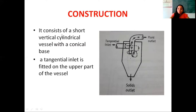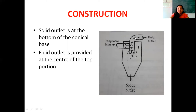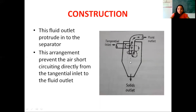The cyclone separator consists of a short vertical cylindrical vessel with a conical base. The tangential inlet is fitted at the upper part of the vessel. A fluid outlet is present at the top central portion of the cyclone separator, and the fluid outlet protrudes into the cyclone separator.